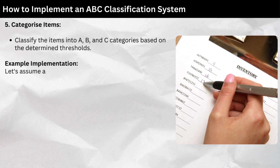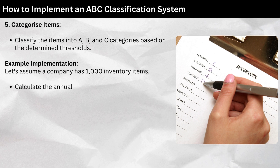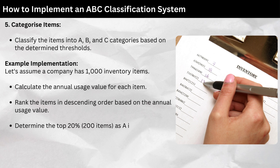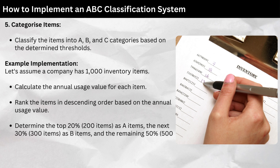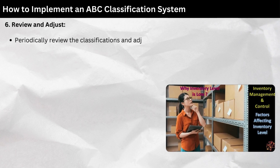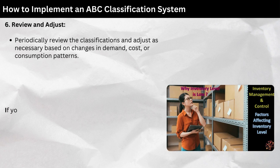Example implementation: Assume a company has 1,000 inventory items. Calculate the annual usage value for each item, rank them in descending order, determine the top 20% (200 items) as A items, the next 30% (300 items) as B items, and the remaining 50% (500 items) as C items. Categorize the items accordingly. Step 6 — Review and adjust: Periodically review the classifications and adjust as necessary based on changes in demand, cost, or consumption patterns.